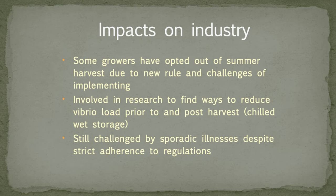A number of companies have been involved in research to find ways to reduce Vibrio load prior to and post harvest. I'll talk more about chilled wet storage, which is an area Taylor's is getting into in a fairly big way. We are still challenged, despite the rules and all the updates — we are still experiencing sporadic Vibrio illnesses, even when our company goes above and beyond the requirements. Part of that is just the volume of oysters we produce — somewhere around 45 to 50 million oysters a year — we're out there on a lot of plates and will be implicated because of that.